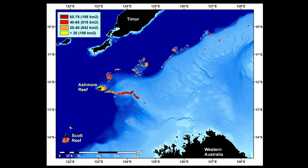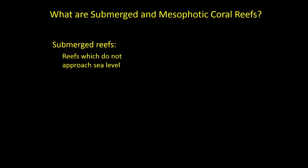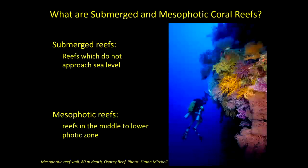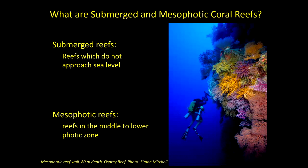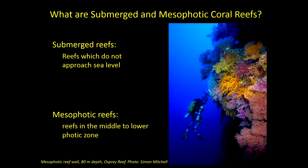Mesophotic reefs are slightly different - they refer to reefs that are in the middle to lower sections of the photic zone. The upper level for a mesophotic reef is taken as being about 30 metres generally, but there's no biological reason for that - that's basically how deep recreational divers are allowed to dive. Once you get below about 30 metres depth, you're into the mesophotic zone, which is generally considered to extend down as deep as photosynthesis can occur. In clear tropical areas, that might be down to 150 or 200 metres or more.